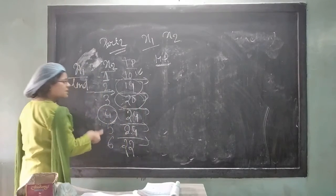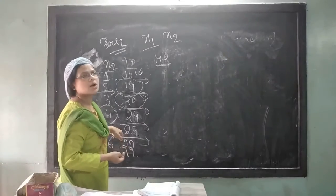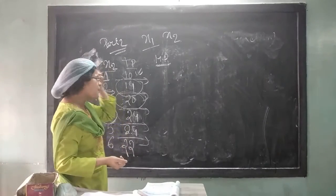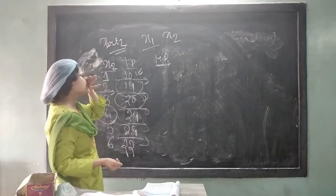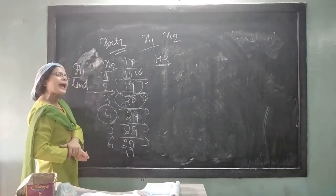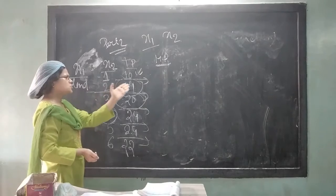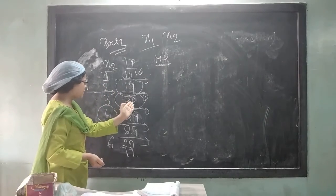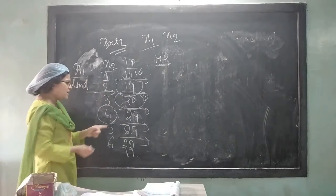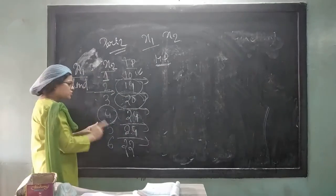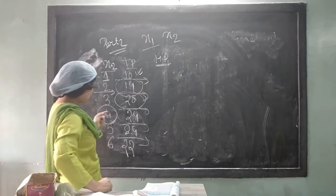When 5th laborer is entered, there is no change in the total production. Suppose, when one laborer employed, we have produced 10 kg of wheat. Then second, 14. Then third, 20 kg. Fourth, 24 kg. If I employ one extra laborer also, there will be no change in the total production.